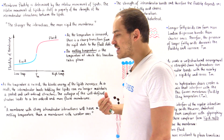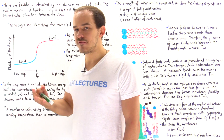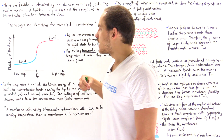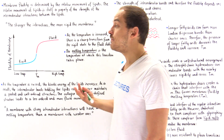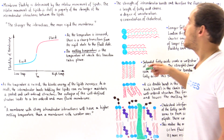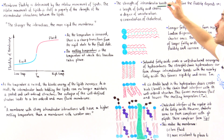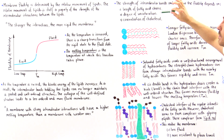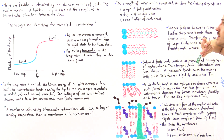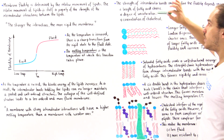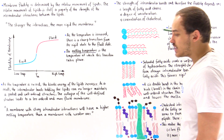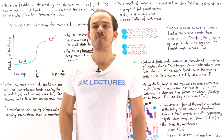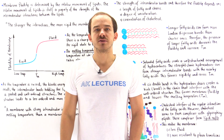In conclusion, three different things influence the fluidity of the membrane: number one is the length of fatty acids, number two is the number of double bonds on those fatty acids, and number three is the concentration of cholesterol within the membrane.